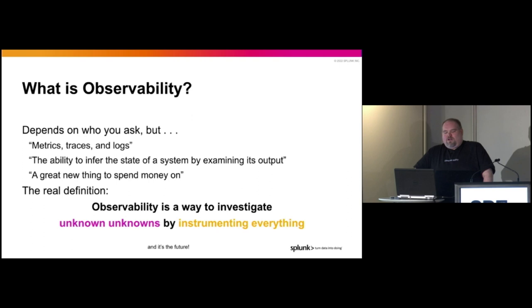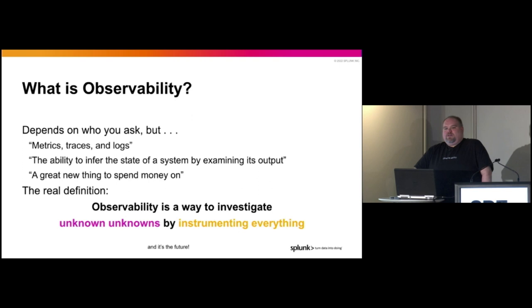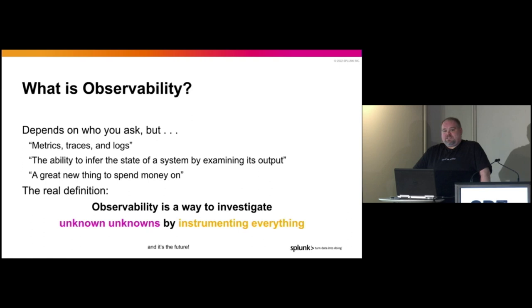That's not what observability is. It's like a cheeseburger isn't meat, cheese, and buns, right? Those are things you need to have a cheeseburger — or observability in this case — but those aren't the cheeseburger itself. The official Wikipedia definition you're going to see comes from a branch of science called control theory about building factories and automating systems from back in the late 1920s. It's been around for a while: the ability to infer the state of a system by examining its output.